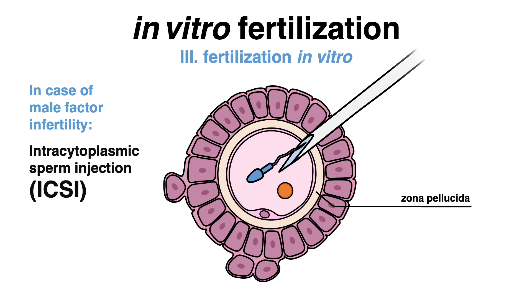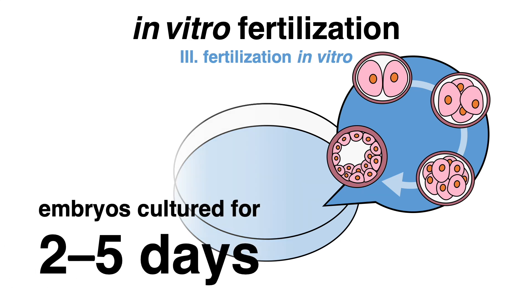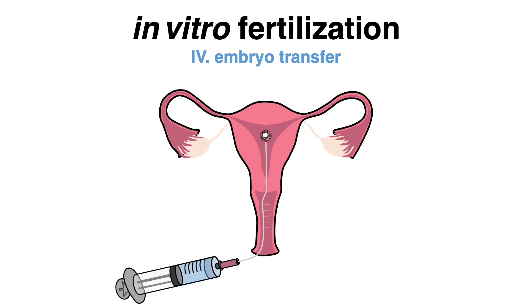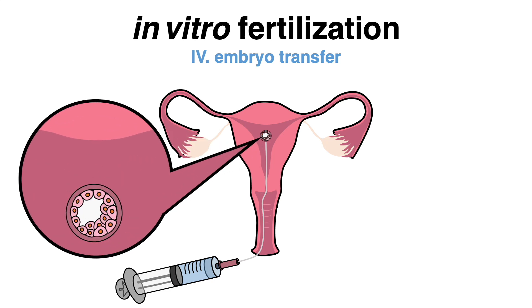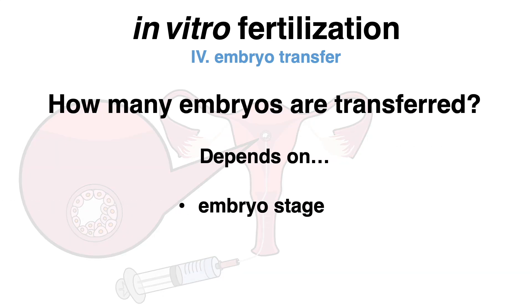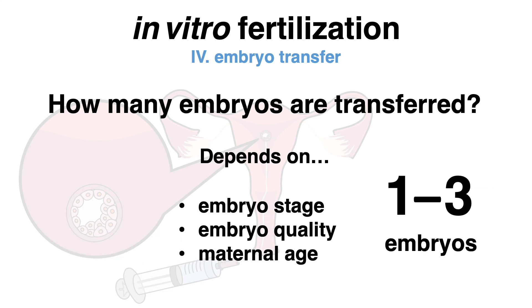After fertilization, the eggs will divide. The embryos are cultured and grown in a lab for the first 2 to 5 days. Only after that they will be transferred into the uterus. This is achieved by trans-abdominal ultrasound guidance and a catheter passing through the cervix. The embryo or embryos are placed 1 to 2 cm from the uterine fundus. The number of embryos transferred depends on embryo stage, embryo quality, and maternal age — usually only 1, and in some cases up to 2 or 3 embryos are transferred.